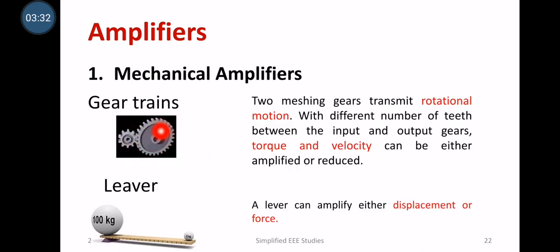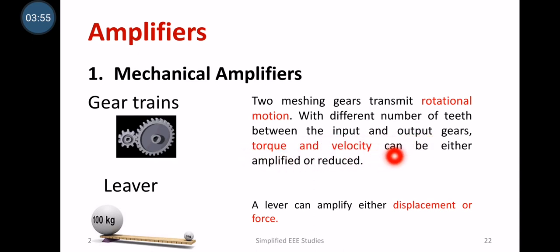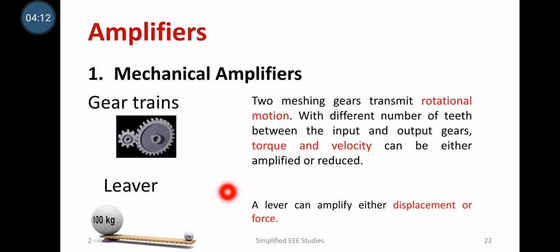You can see how a gear train works — it is a typical example of a mechanical amplifier and also a model used in control systems. Two meshing gears transmit rotational motion. With different numbers of teeth between input and output gears, torque and velocity can be either amplified or reduced depending on the application. A lever is another example — it can amplify either displacement or force, and different types of cantilever supports are available.